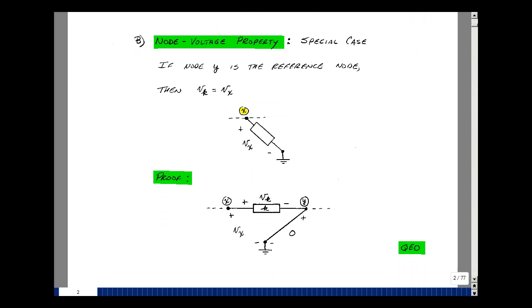We can show why that's true by just setting v sub y equal to zero and now we've got this node voltage which is v sub x minus v sub y which is zero, which is just equal then to just v sub x.